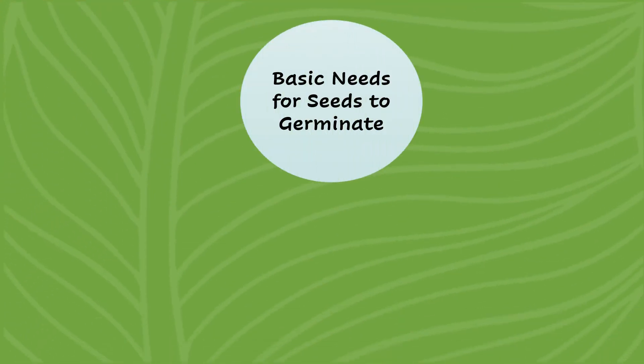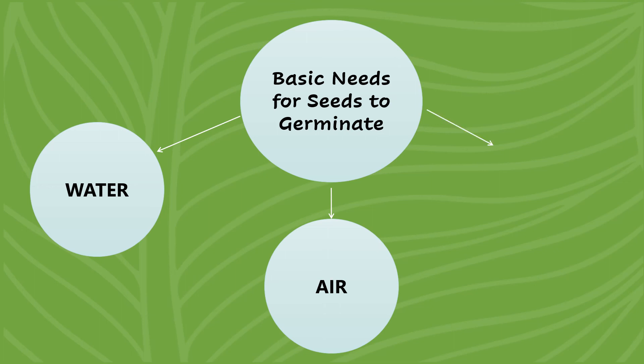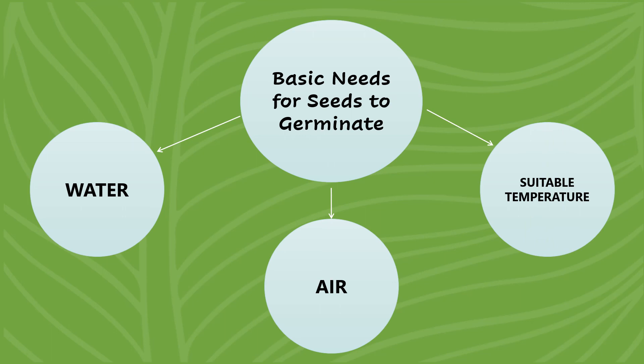Let us learn what are the basic needs for seeds to germinate. The first one is water — without water, seeds will not germinate. The second one is air — without air, seeds will not germinate. The third one is suitable temperature. Seeds will not germinate if the temperature is too hot or too cold. The temperature must be suitable for the seeds to germinate and grow. When all three needs are met, the seeds will start to germinate.